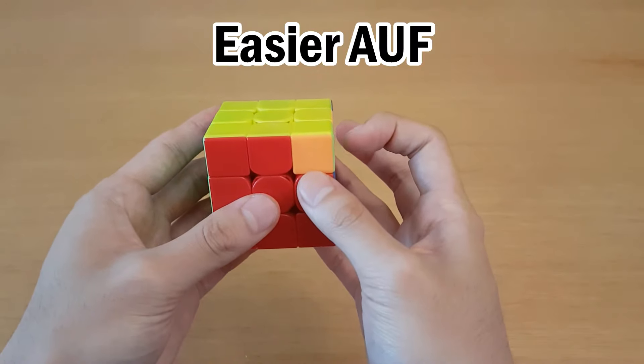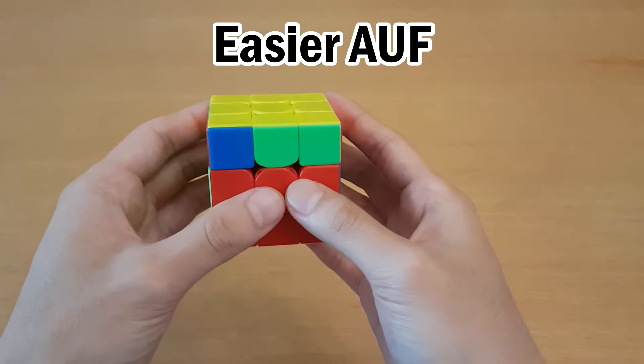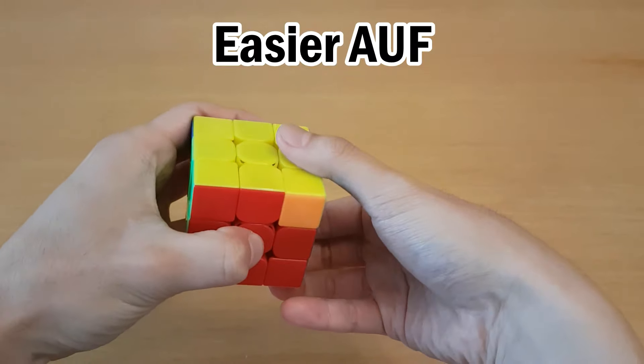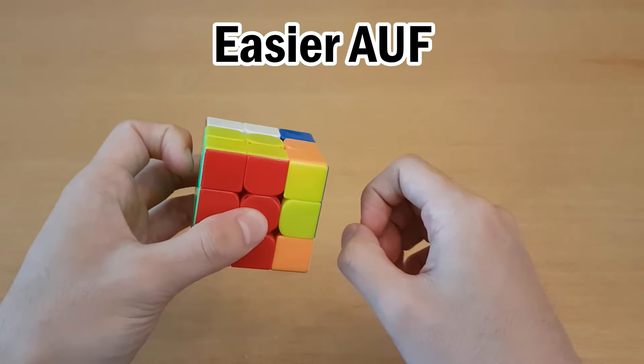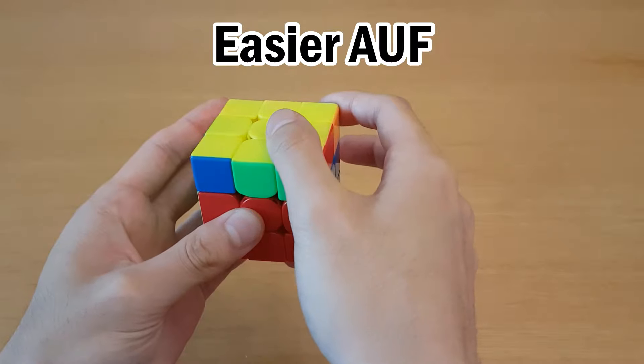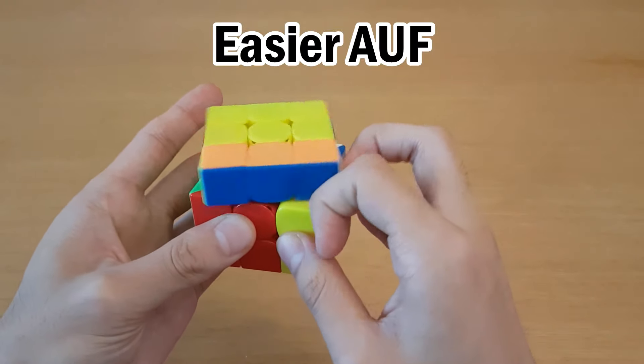And instead, once you recognize, you should do either this, so you can re-grip while you do that, and that saves you a pause. Or you can do the re-grip right away, and start like this, and then just go into the algorithm with your other finger.